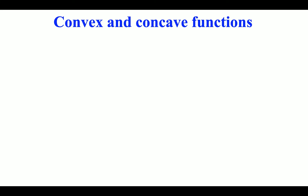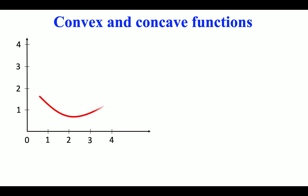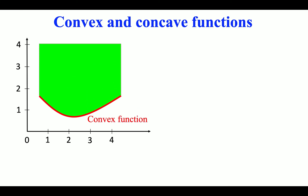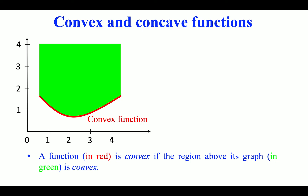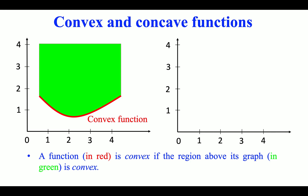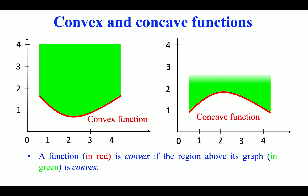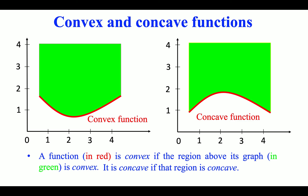Convex and concave functions: a function shown in red is convex if the region above its graph, shown in green, is convex. It is concave if that region is concave.